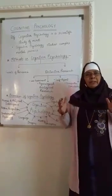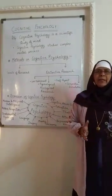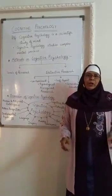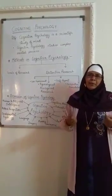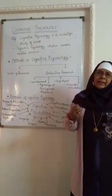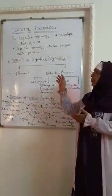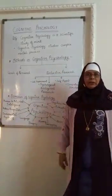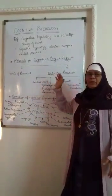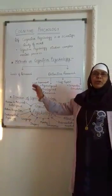When psychology studies human beings and animals, there has to be some procedure to study, which is called a scientific procedure to study their thinking, study their remembering, etc. So we have methods in cognitive psychology. Basically, there are two methods in cognitive psychology. Goals of research — we are doing some research work.